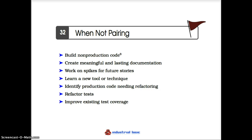One useful solo activity is to build non-production code — tooling. Another is to create useful documentation. Another is to work on spikes for future stories — spikes are not production code and are intended to be discarded. To learn a new tool or technique you may want to work alone, with a pair, or with a large group. If you want to identify code that needs refactoring, you don't need a pair for that. Refactoring tests is not producing new functional code — make them read well, improve test coverage. And who doesn't have a build system that couldn't use a little bit of love?